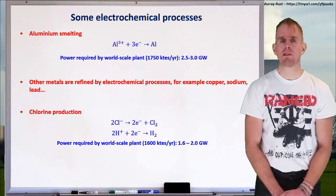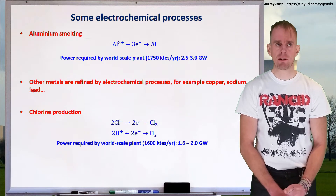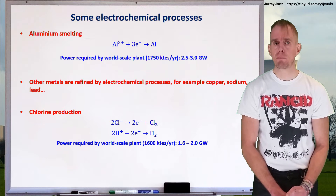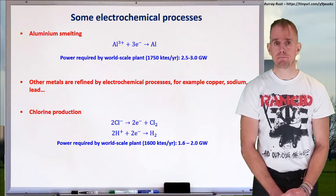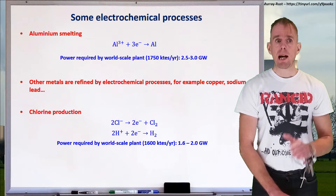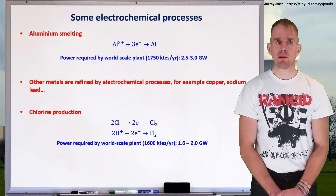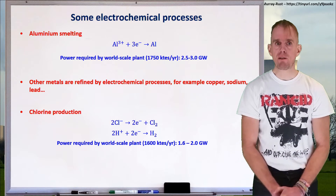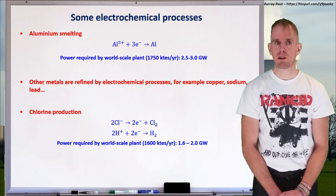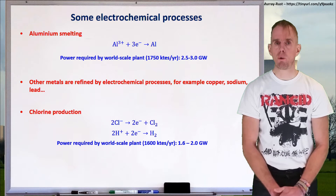Many different metals are produced by electrochemical processes — for example, copper, sodium, and lead. However, there's one other thing produced at very large scale by very high power electrochemical processes, and that is chlorine.